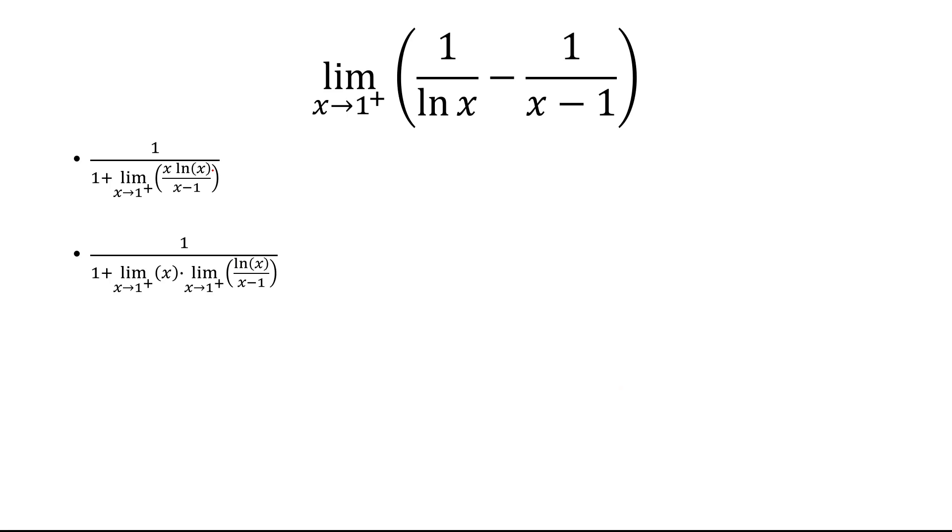Okay, well, first, I'm going to split it up. We have x multiplying ln of x. So we're going to use a product rule of limits. Now, I can easily do this because if I plug in x equals 1, I just get 1 here. And so I simplified this fraction to just ln of x over x minus 1.